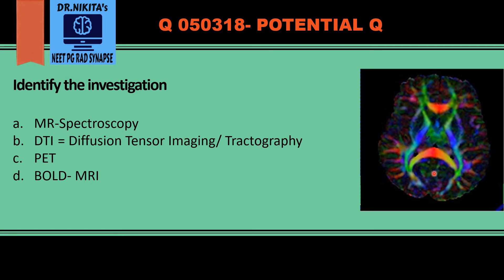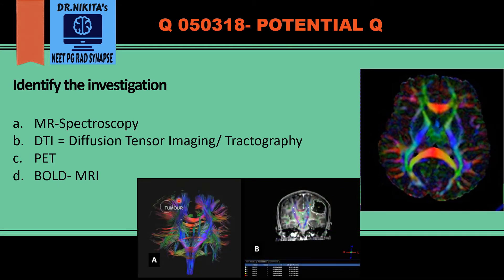Basically, DTI or tractography is done for delineating the white matter tracts. It is done to delineate the white matter tracts and see the effect of a tumor on them. For example, in this image there is a lesion here which is having a mass effect on the white matter tracts, so to evaluate that, a tractography or DTI is done.